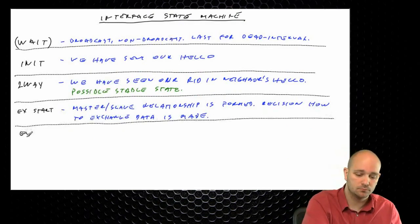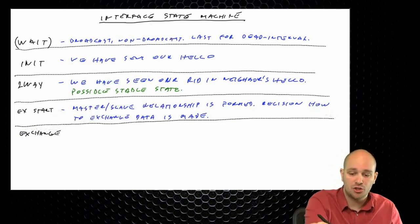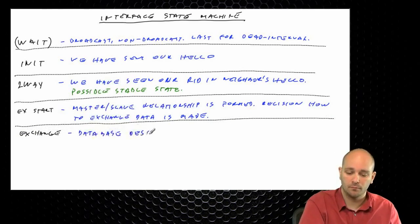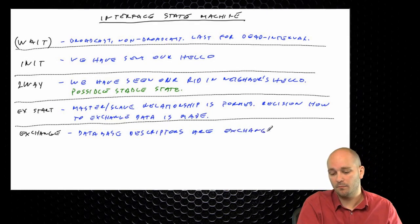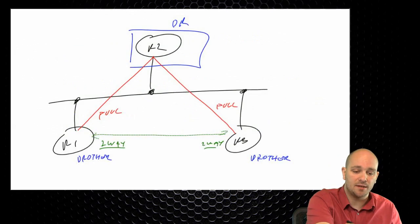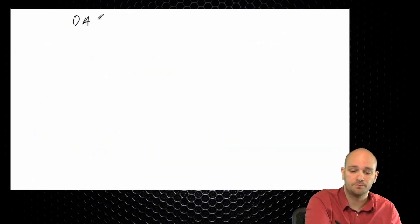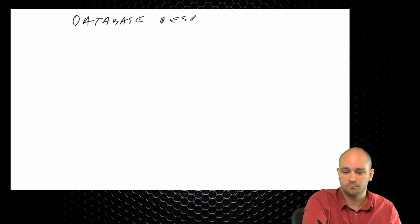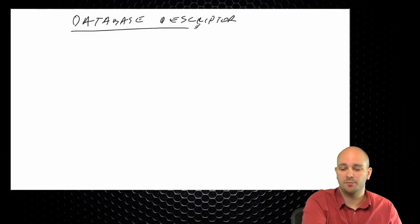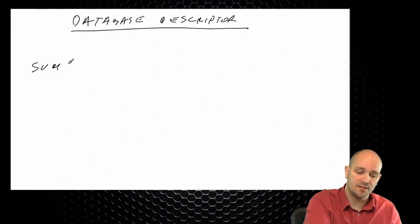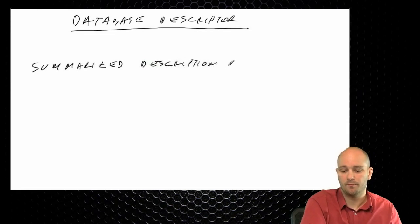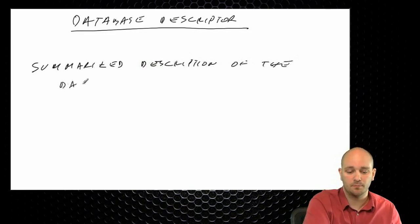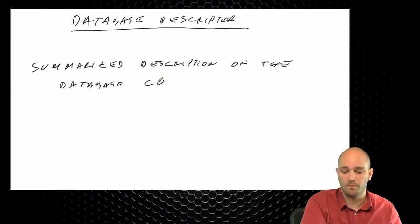The decision about how to exchange information is based on the MTU size. Both routers exchange information about what they think their MTU is configured on the interface. If they are in agreement, the master says they can proceed. If they are in disagreement about the MTU size, they will not proceed at this point.